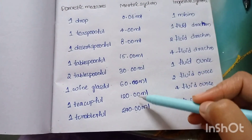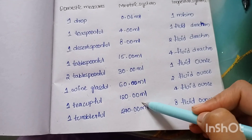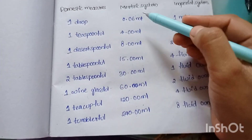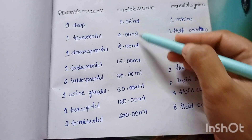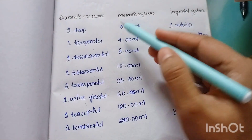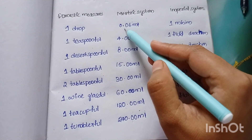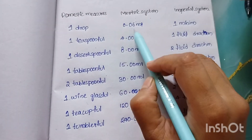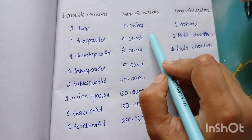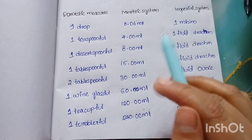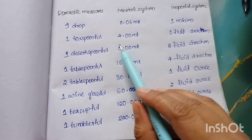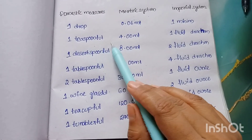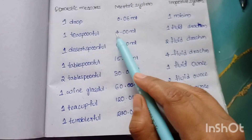Let's take a look at these values. First, in the metric system: 1 drop is 0.06 ml. Then 1 teaspoonful is 4 ml.